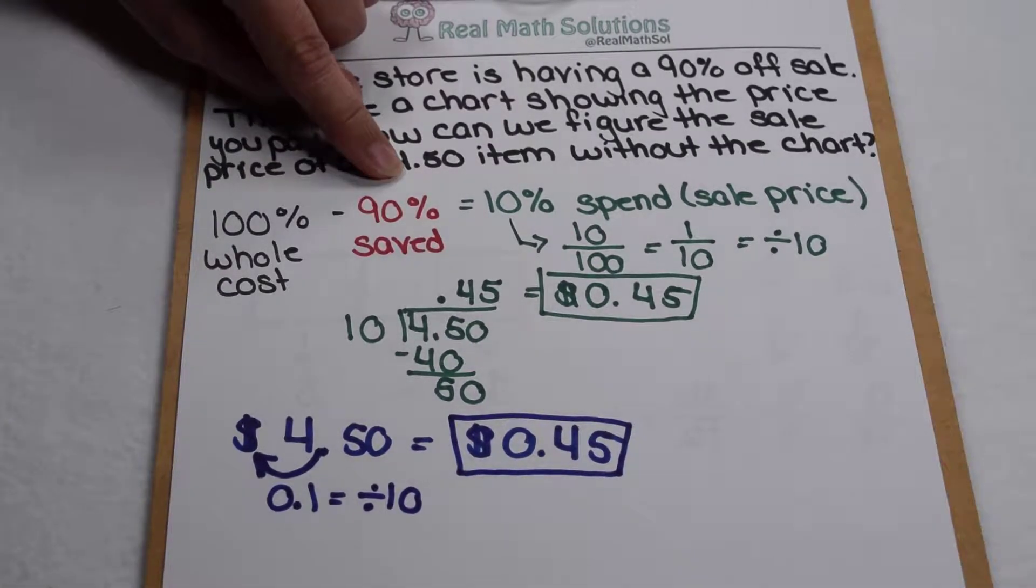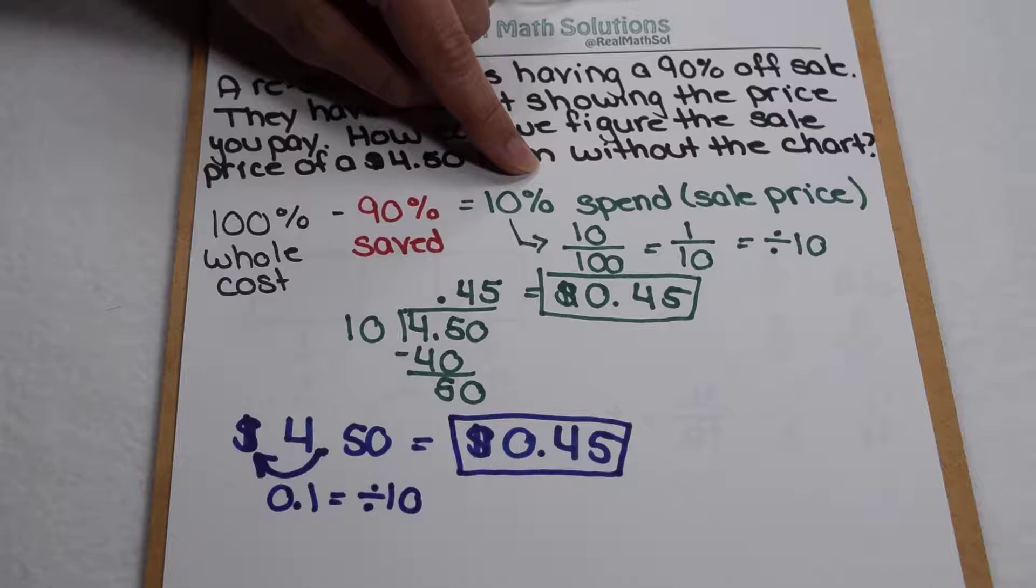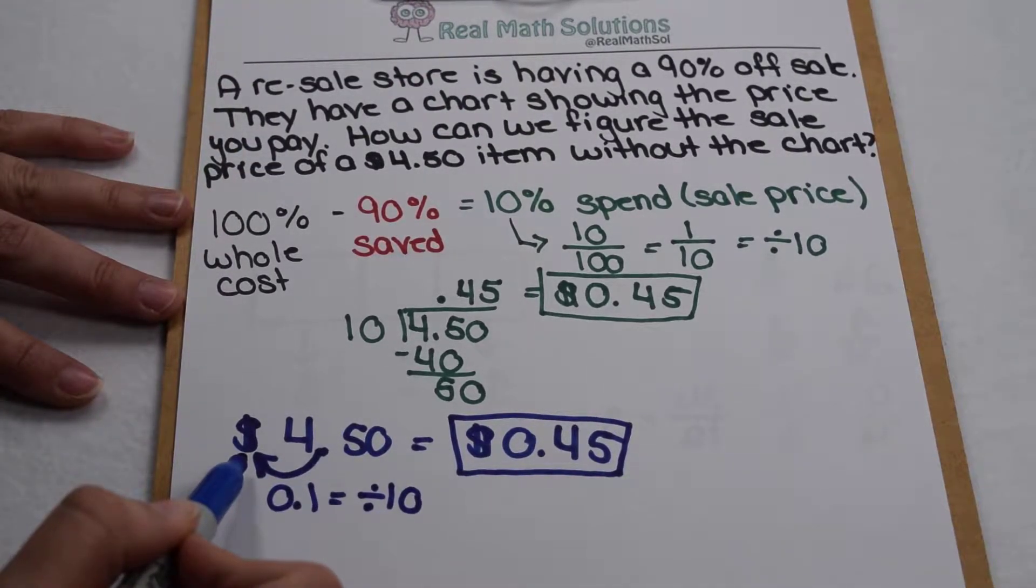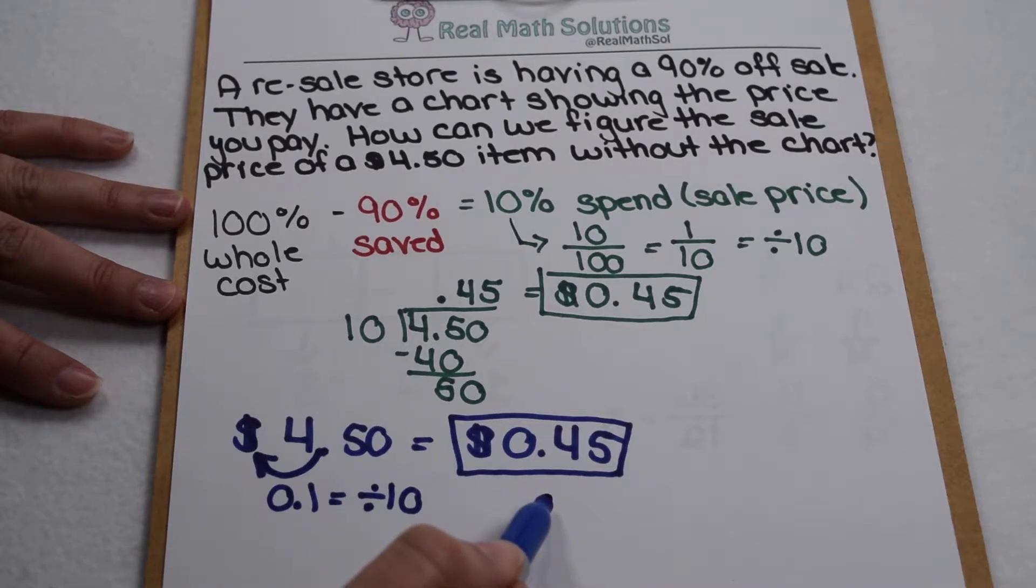So really if you have a 90% off sale finding the amount you spend simply means I divide by 10 by moving my decimal one place to the left and that will always tell me the amount I'm going to pay.